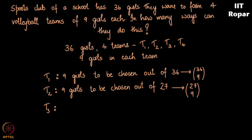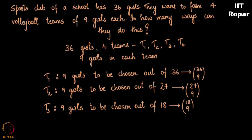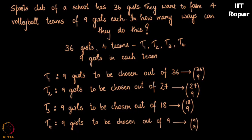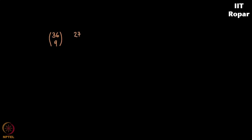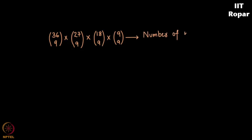Now for team 3, we have 9 plus 9 = 18 girls already out of the 36 girls. So we have 18 girls remaining, out of them nine girls have to be chosen, and this can be done in 18 choose 9 ways. The fourth team will have just nine girls remaining and they can be chosen in 9 choose 9 ways. So for team 1 we have 36 choose 9, team 2 we have 27 choose 9, team 3 we have 18 choose 9 and team 4 we have 9 choose 9. We want all these to happen, so by the rule of product we multiply all these and get 36 choose 9 into 27 choose 9 into 18 choose 9 into 9 choose 9. In these many ways 4 teams can be formed.